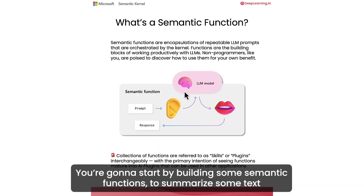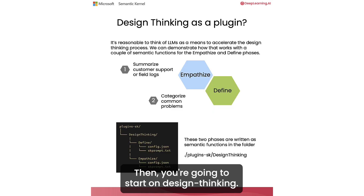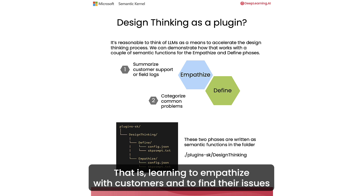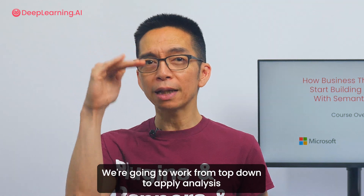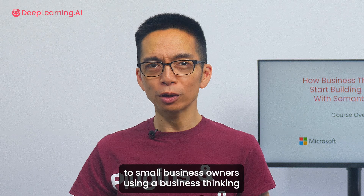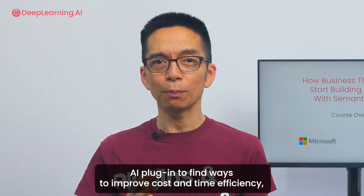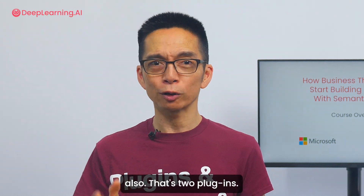You're going to start by building some semantic functions to summarize text, then learn how to chain semantic functions to enhance their effects. Then you'll start on design thinking — learning to empathize with customers and find their issues using an AI plugin. We're also going to work top-down to apply analysis to small business owners using a business thinking AI plugin to find ways to improve cost and time efficiency.